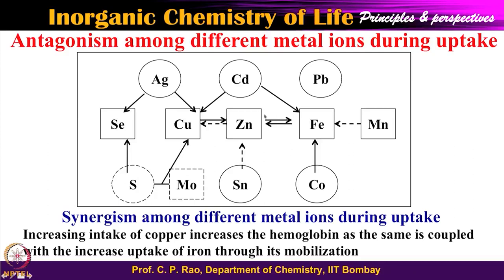Please focus on this particular slide. Take copper and zinc as an example. There is a solid line connecting them with an arrow from copper to zinc. This means that as the concentration of copper increases, the uptake of zinc decreases — that is antagonistic. The reverse is shown by a broken line arrow: as zinc uptake increases, copper is not so strongly affected. So a solid line means they are strongly coupled, and a broken line means weakly coupled. The arrow direction indicates which element antagonistically affects the other — copper affects zinc in that direction.